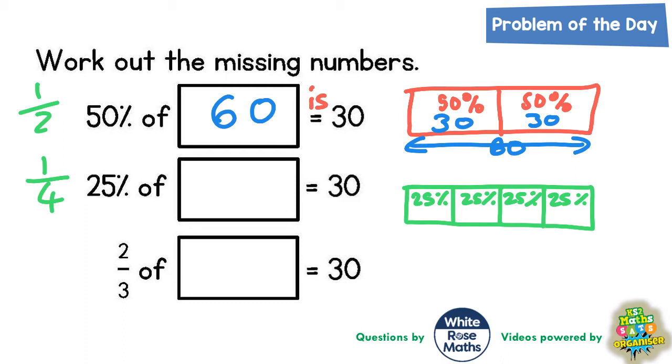So this 25 percent is worth 30, this 25 percent is worth 30, this 25 is worth 30, this 25 is worth 30.